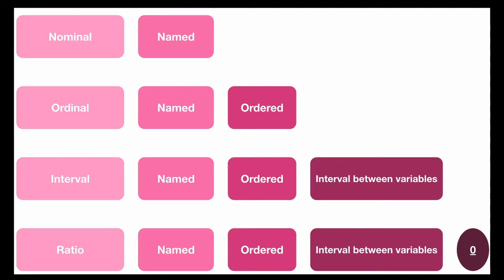Ordinal scales, however, are categories that are in order, such as social class — for example, first class, second class, third class — and another example is disease severity, like mild, moderate, and severe. Nominals show only differences, while ordinals show differences and the direction of those differences.